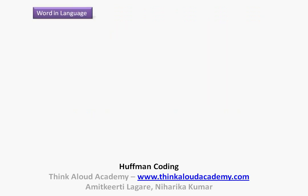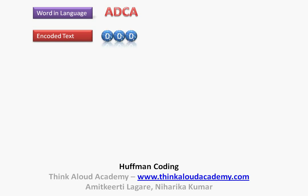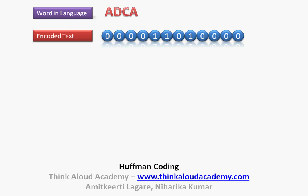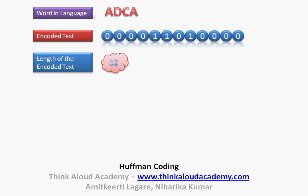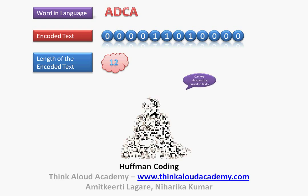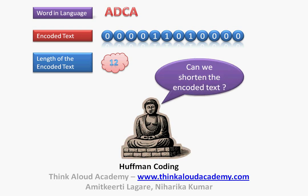Suppose I have a word in this language — one of the words in my novel that I had written. The word is A, D, C, and A. If I were to encode this text using the bits, then it would be 000 for A, 011 for D, 010 for C, and again 000 for A. If I do the count of the length of these bits, I will see that there are 12 bits in this whole text. The point to ponder over is: can I have an algorithm which can shorten this length of the encoded text?